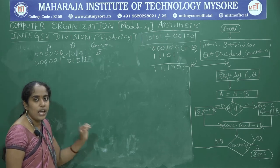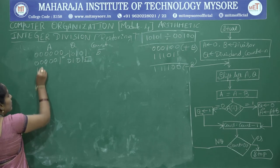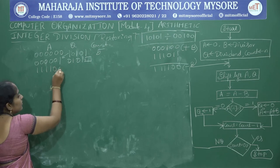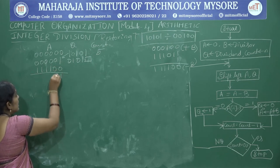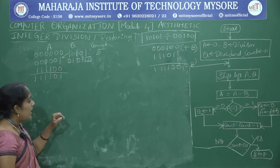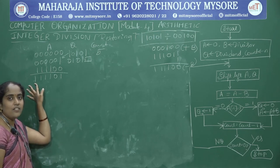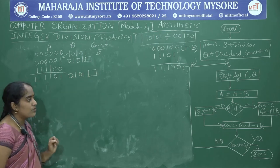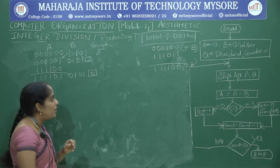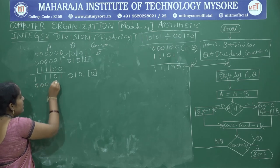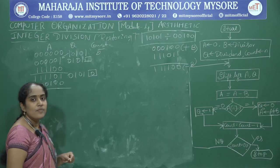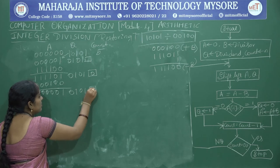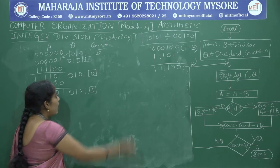The result is 1 followed by four 1s. Check the most significant bit of A — it is 1. So set Q0 to 0. Restore A: A equals A plus B, where plus B is 000100. Result is 000001 with Q showing 01010. Decrement count: count becomes 4.